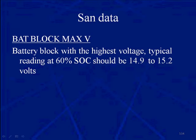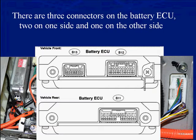That should be the lowest reading. The max should also be 14.9 to 15.2 volts. Between all the battery blocks, when you look at those sense wires on every positive block inside the modules, there should be no greater than 3 tenths of a volt difference between the min and the max.